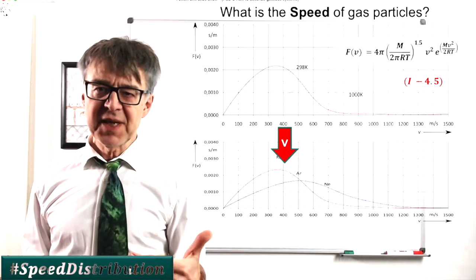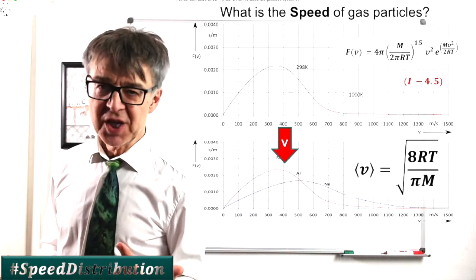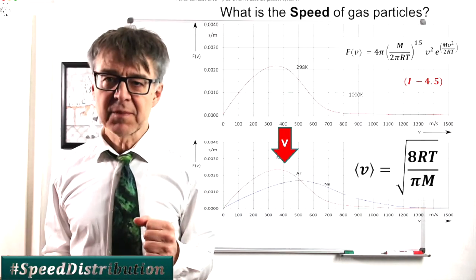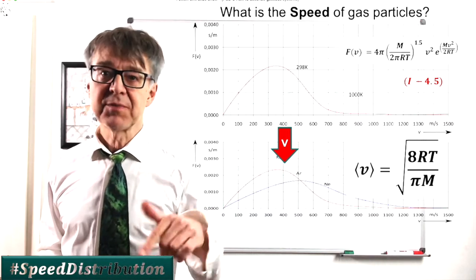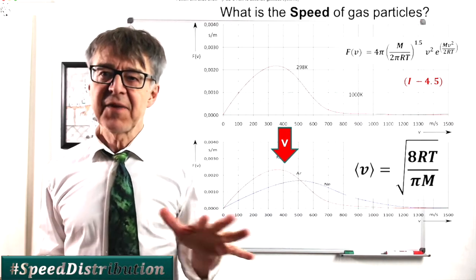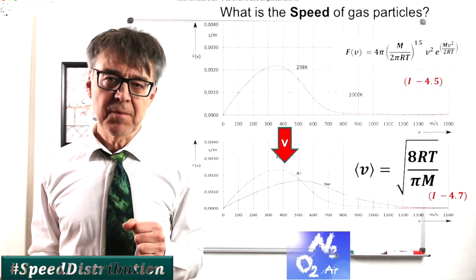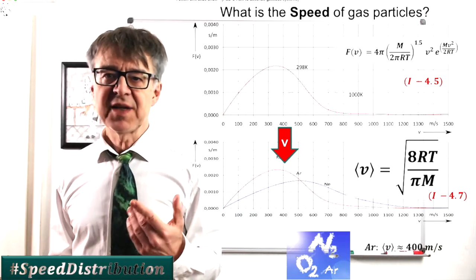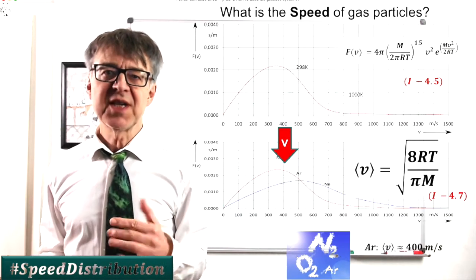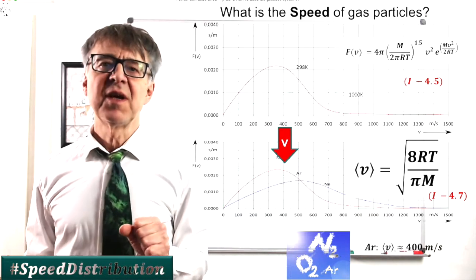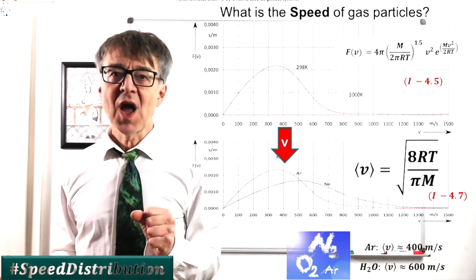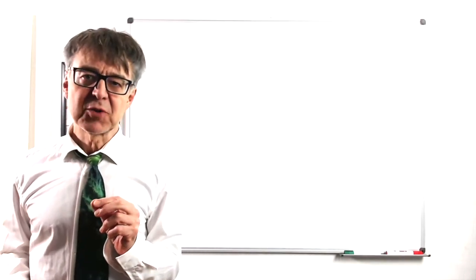The curve is not symmetrical, so we find the average speed somewhat to the right of the maximum. The average velocity depends both on temperature and on molecular weight. The higher the temperature and the smaller the molecular mass, the faster the particle will move. The speed of argon atoms, for example at room temperature, is approximately 400 meters per second. Water, as a lighter particle, has a significantly higher speed at the same temperature.